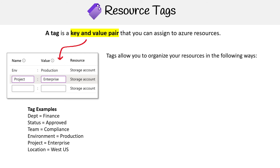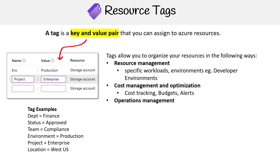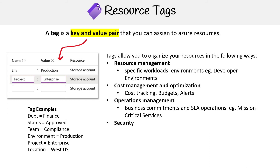Tags allow you to organize your resources in the following ways. You can organize them via resource management — that's where you specify workloads and environments like developer environments. There's cost management and optimization, so cost tracking, budgets, and alerts. There's operation management, which could be business commitments to SLA operations, where you might tag services considered mission critical. And there's security — classification of data and security impact.